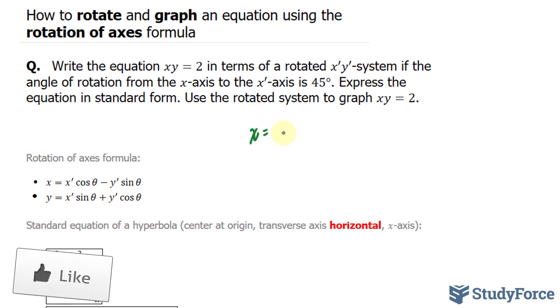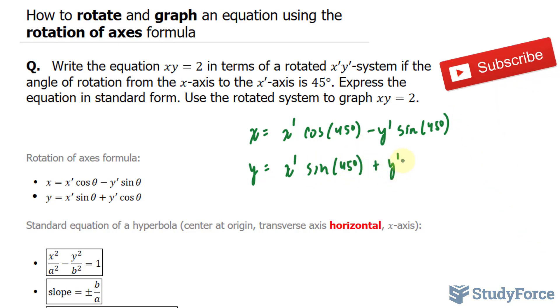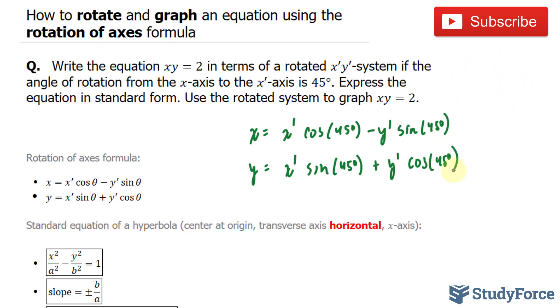We have x = x' cos(45°) - y' sin(45°), and you can use special triangles to evaluate that or your calculator. Y = x' sin(45°) + y' cos(45°).